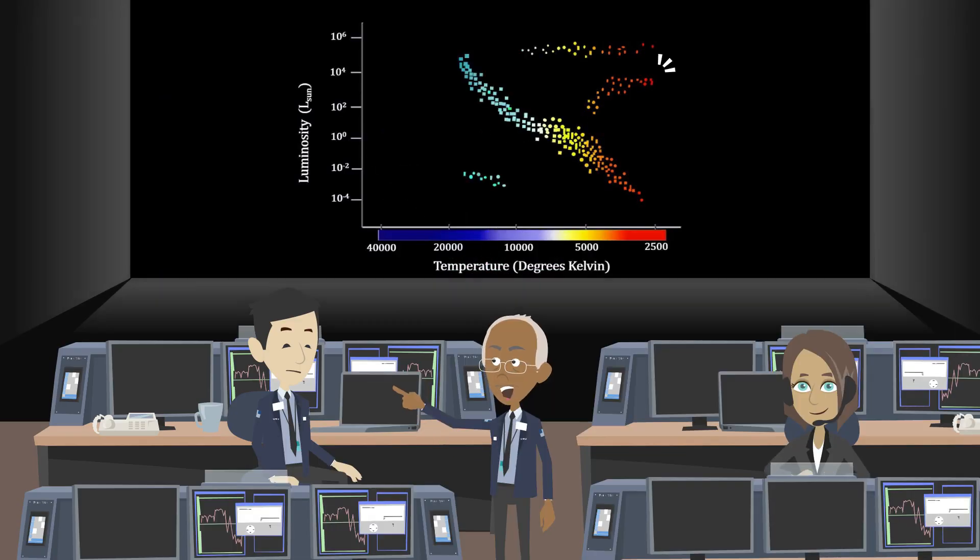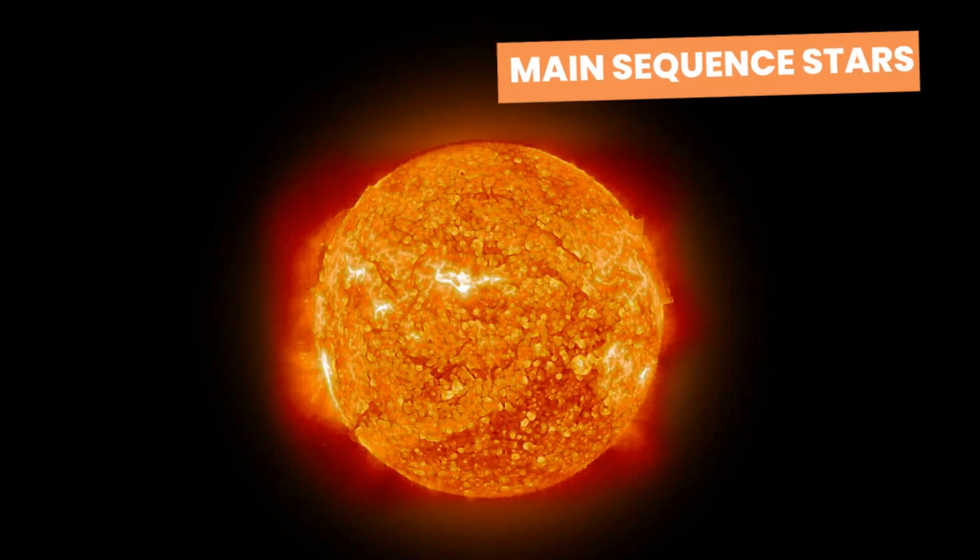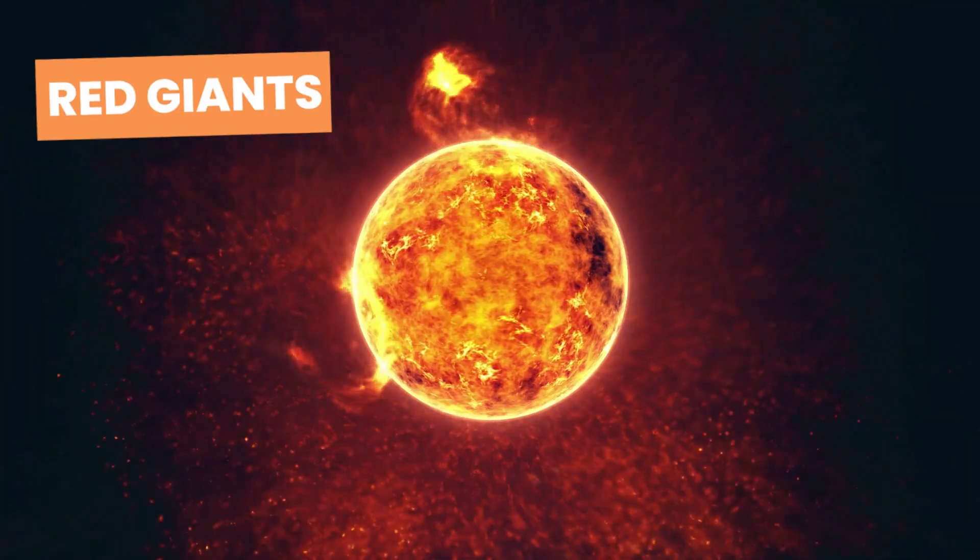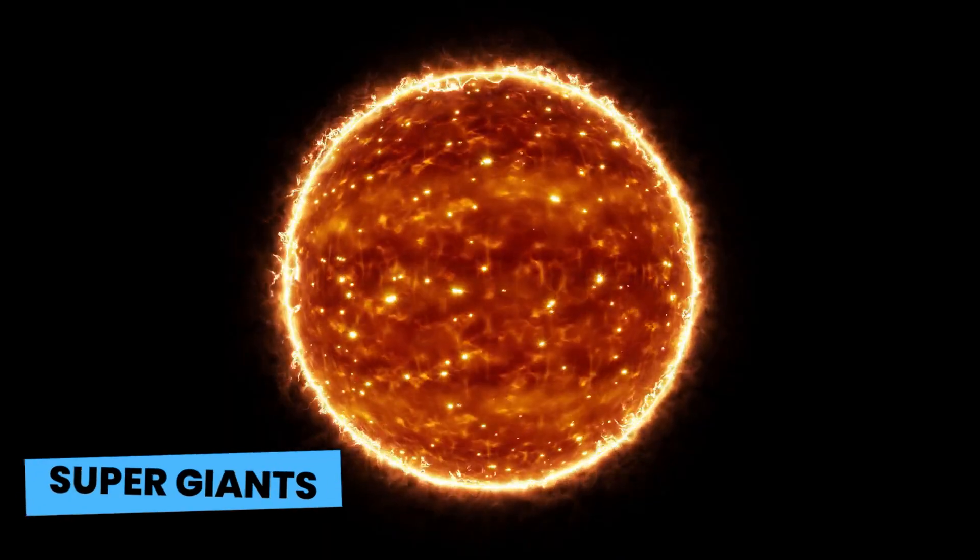Using the Hertzsprung-Russell diagram, scientists have learned that stars fall into several different categories, including main sequence stars, red giants, white dwarfs, and supergiants.